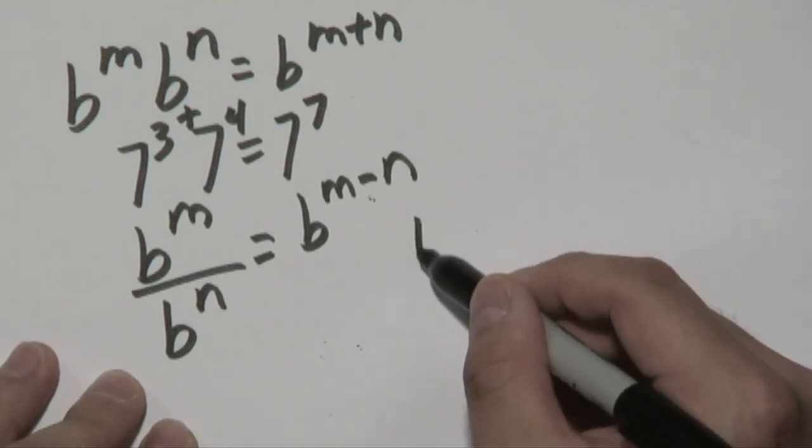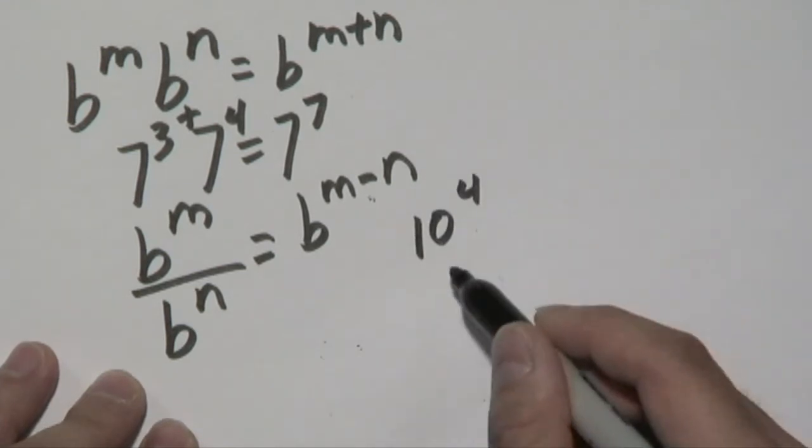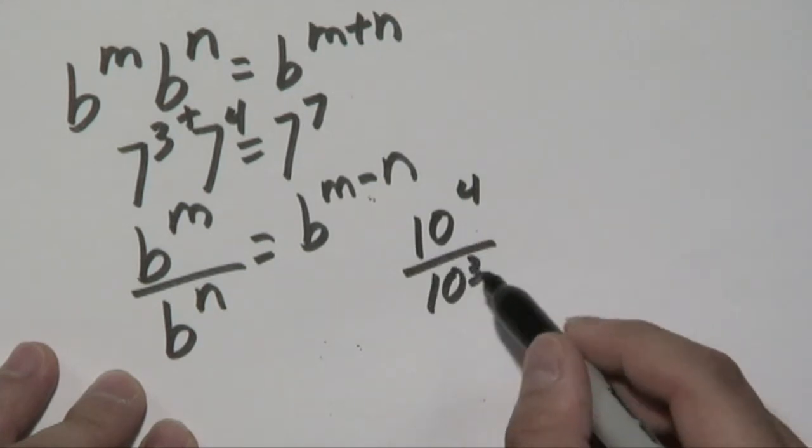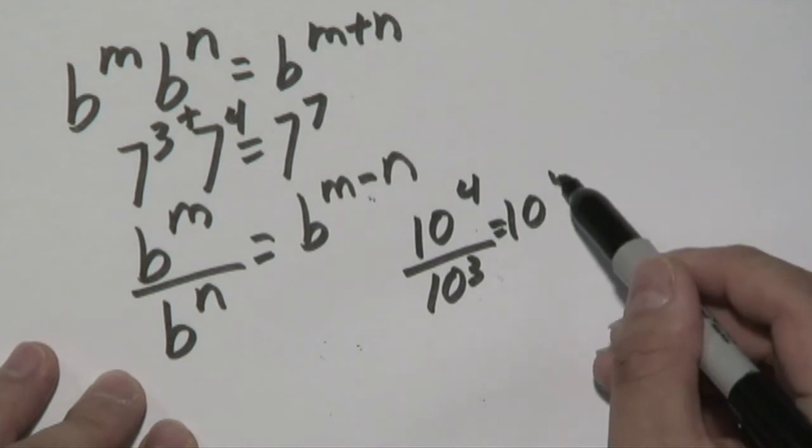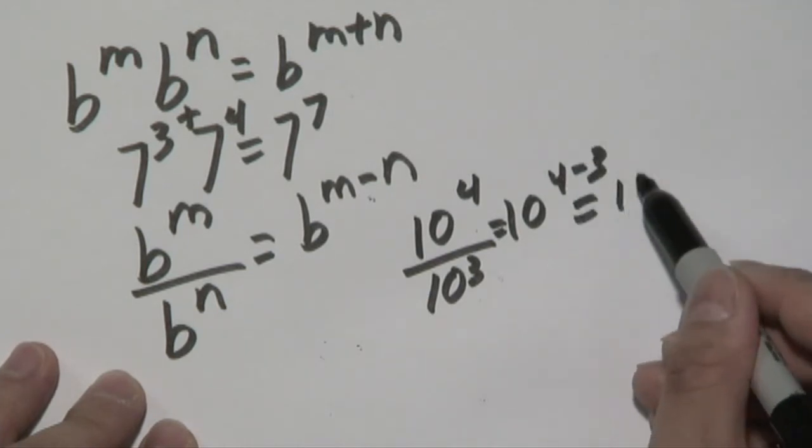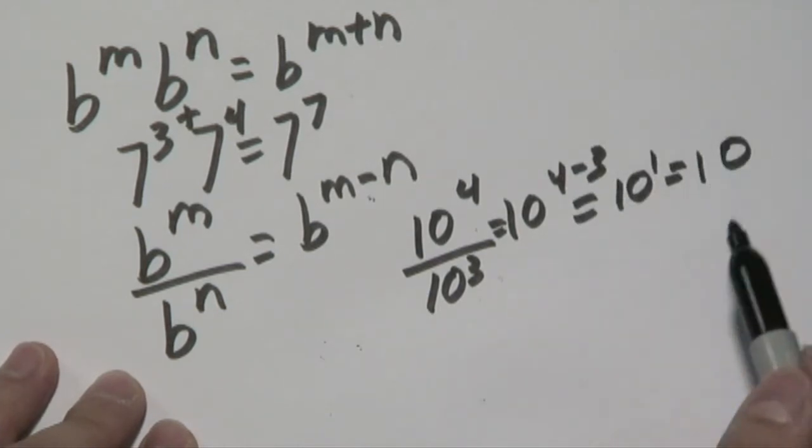So hypothetically, if you have 10 to the 4th over 10 to the 3rd, you would subtract the 4 and the 3, and you will get 10 to the 1, which as you know is 10.